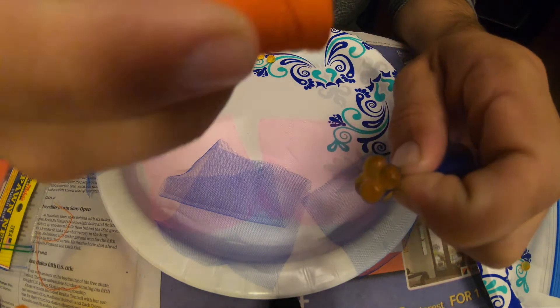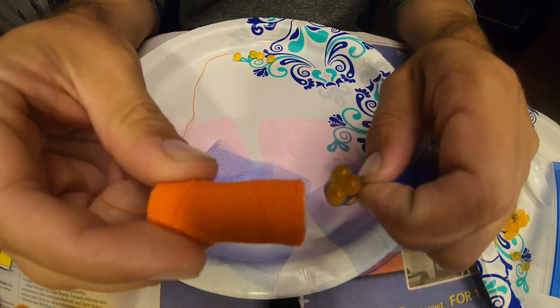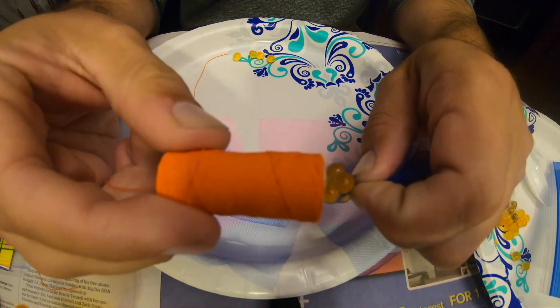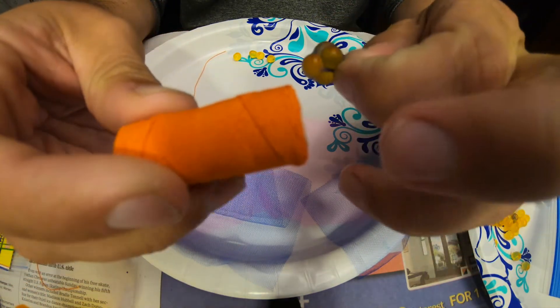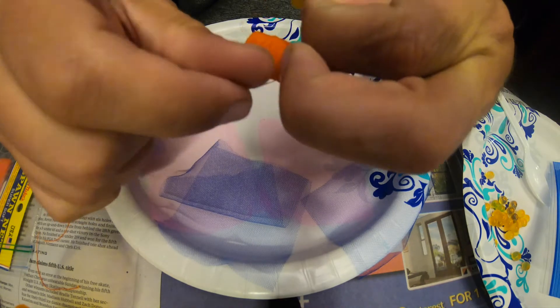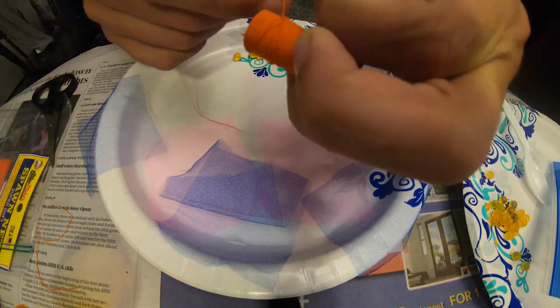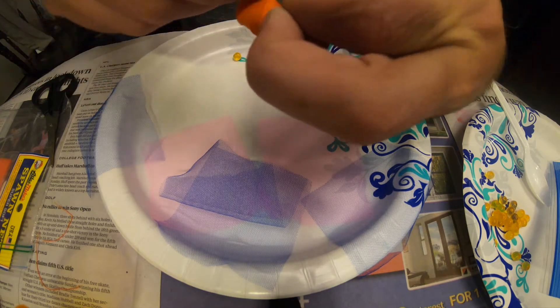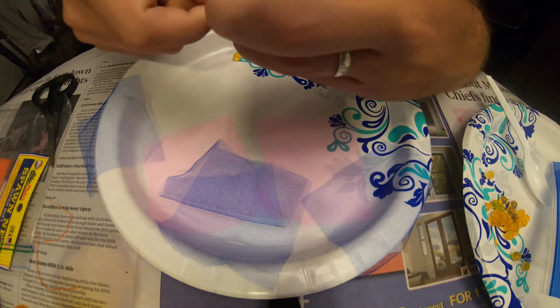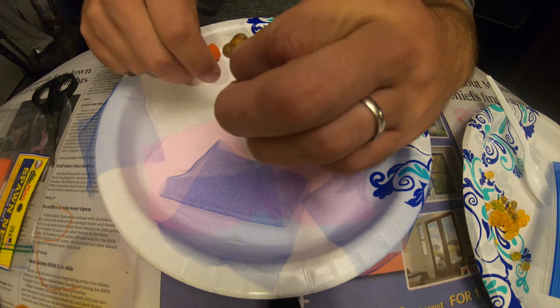So now that we have that all set, we're gonna grab some thread to tie these. I use this thread right here, it's called magic thread. It's also by Atlas Mike - I think I'm basically using all Atlas Mike stuff today. It's a spongy thread that basically breaks off when you pull it tight enough. It retains its tension so you're not gonna have to worry about tying a knot or anything around this to keep it on. It just holds itself together.